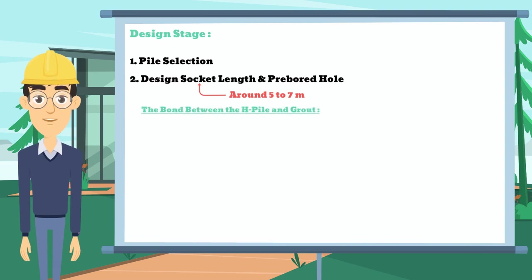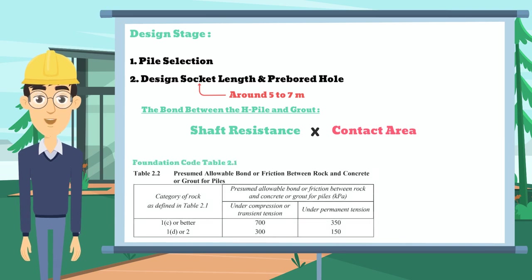For the friction between the rock socket and the grout, we can also determine it by the shaft resistance multiplied by the contact area. Different from the above, the allowable bond friction between rock and grout can refer to Table 2.2 in the foundation code. Looking at this table, consider which set of numbers you prefer for assuming the allowable bond friction between the rock and grout — the upper or the lower set.